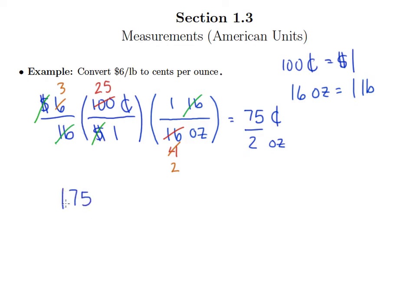75 divided by 2. 2 goes into 7 three times. 3 times 2 is 6. Drop down the 5. 2 goes into 15 seven times with a remainder of 1. Add a 0, add a decimal to the quotient, drop that 0 down, and 2 goes into 10 exactly 5 times.